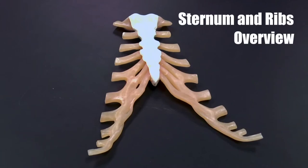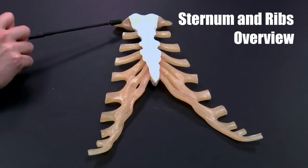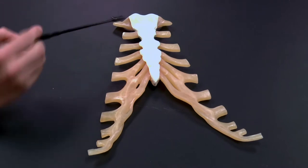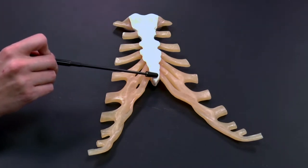This is a view of the sternum and the costal cartilages, the cartilages that attach to the ribs. Here you can see the sternum. This is an anterior view of the sternum.